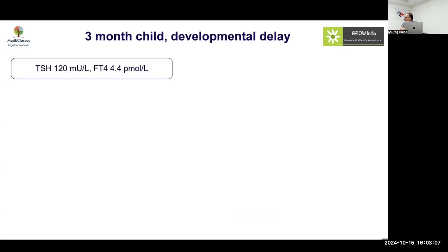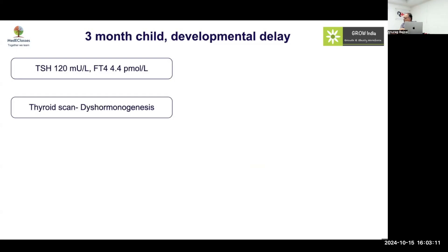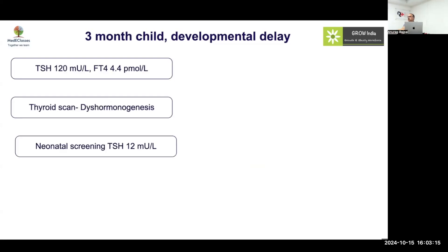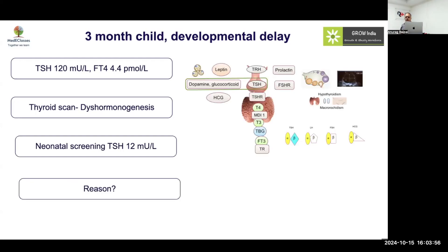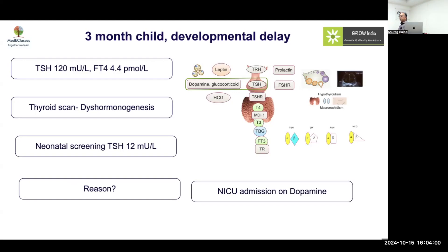Case: a 3-month-old child with developmental delay, TSH of 120, low FT4, thyroid scan showing dyshormonogenesis — but on neonatal screening TSH was only 12. Why was this child missed? What are the possible causes of a false negative thyroid screening? A sick preterm baby on steroids with high stress cortisol, or on dopamine, can have a falsely low TSH. Recommendation: repeat thyroid screening after two weeks in such scenarios.